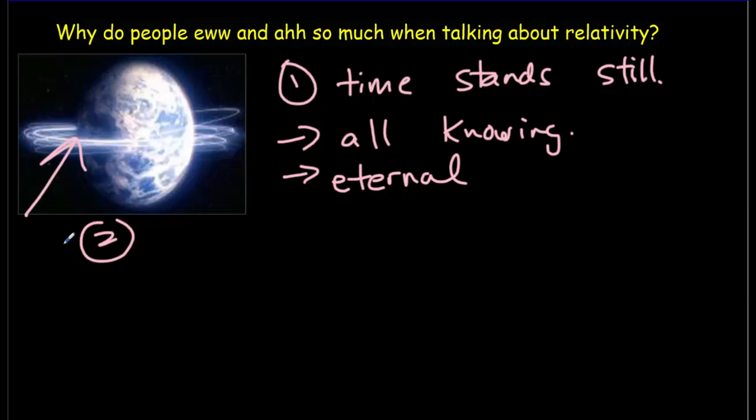Let's consider length contraction. So the continents shrink and shrink and shrink in the direction of Superman's motion. Eventually, as he approaches the speed of light, we could imagine his pupil being long enough to wrap itself all the way around the Earth. In other words, Superman can be everywhere at once. He can be omnipresent. So length contraction leads to omnipresence.